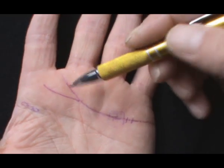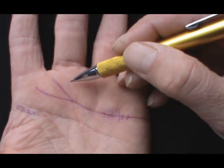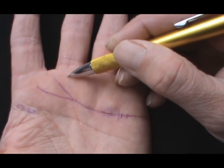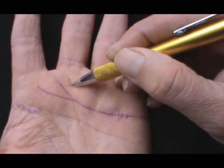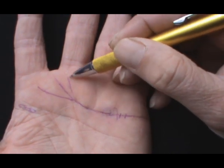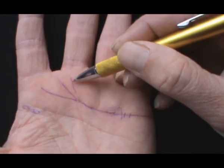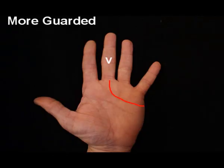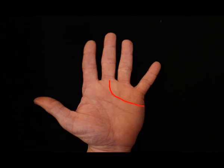If the heart line starts on or under the middle of the Saturn finger, I call this the philosopher finger, then the person may be more private and guarded about his or her deeper personal feelings. They are more realistic. Their heads can control their hearts here so their style can be more serious and analytical.